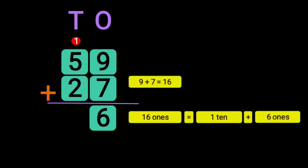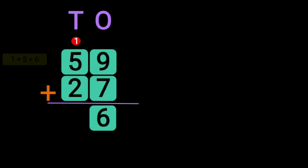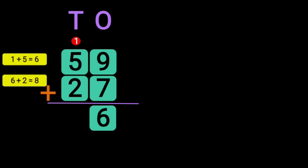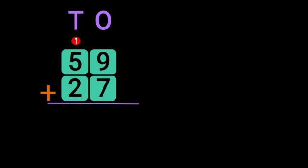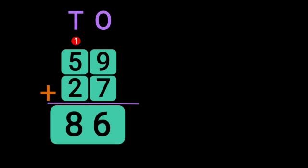Now add the digits in the 10's place: 1 plus 5 gives you 6, and 6 plus 2 gives you 8. So 1 plus 5 plus 2 gives you 8 in the 10's place. The sum of the two two-digit numbers 59 plus 27 gives you the answer 86.